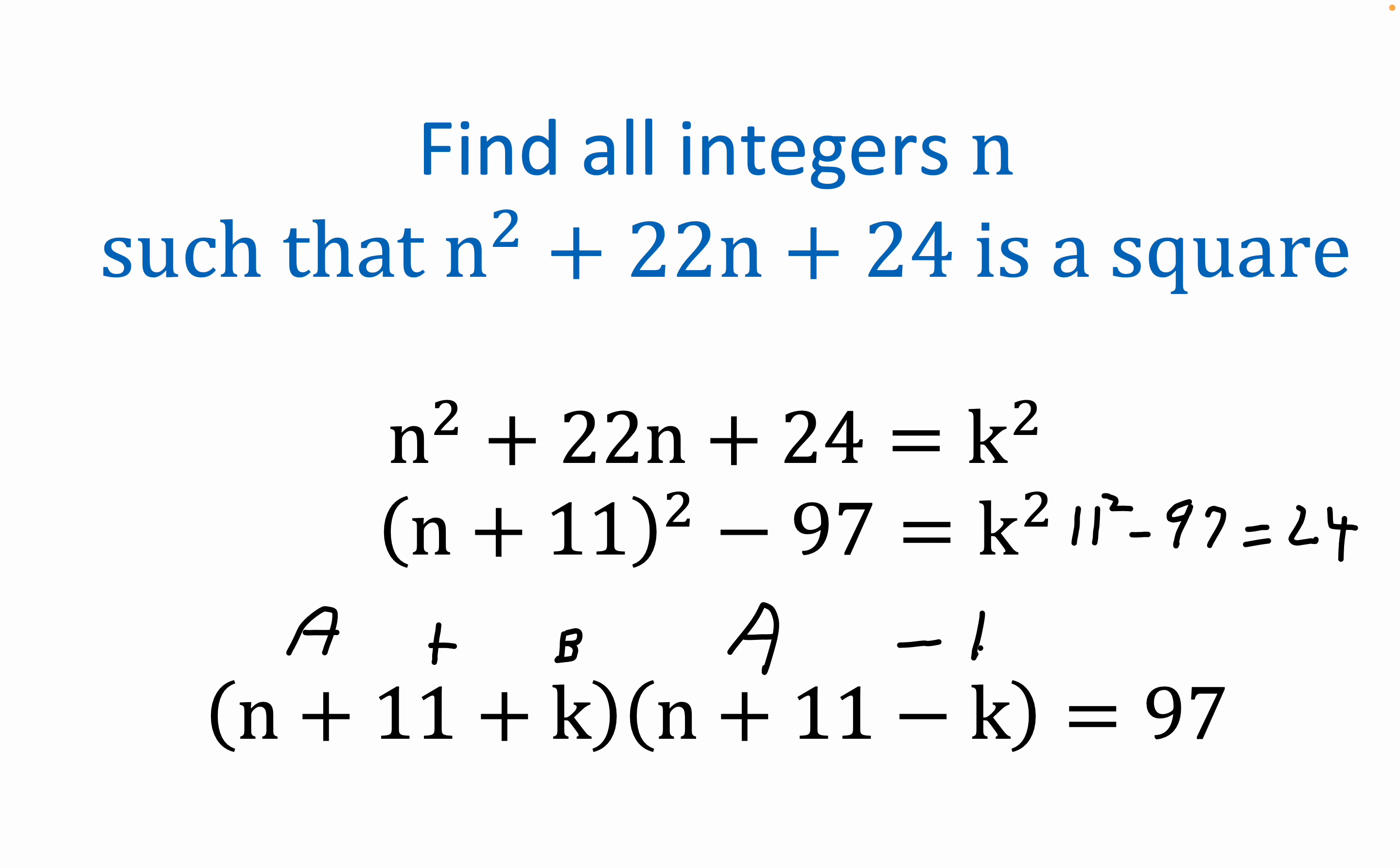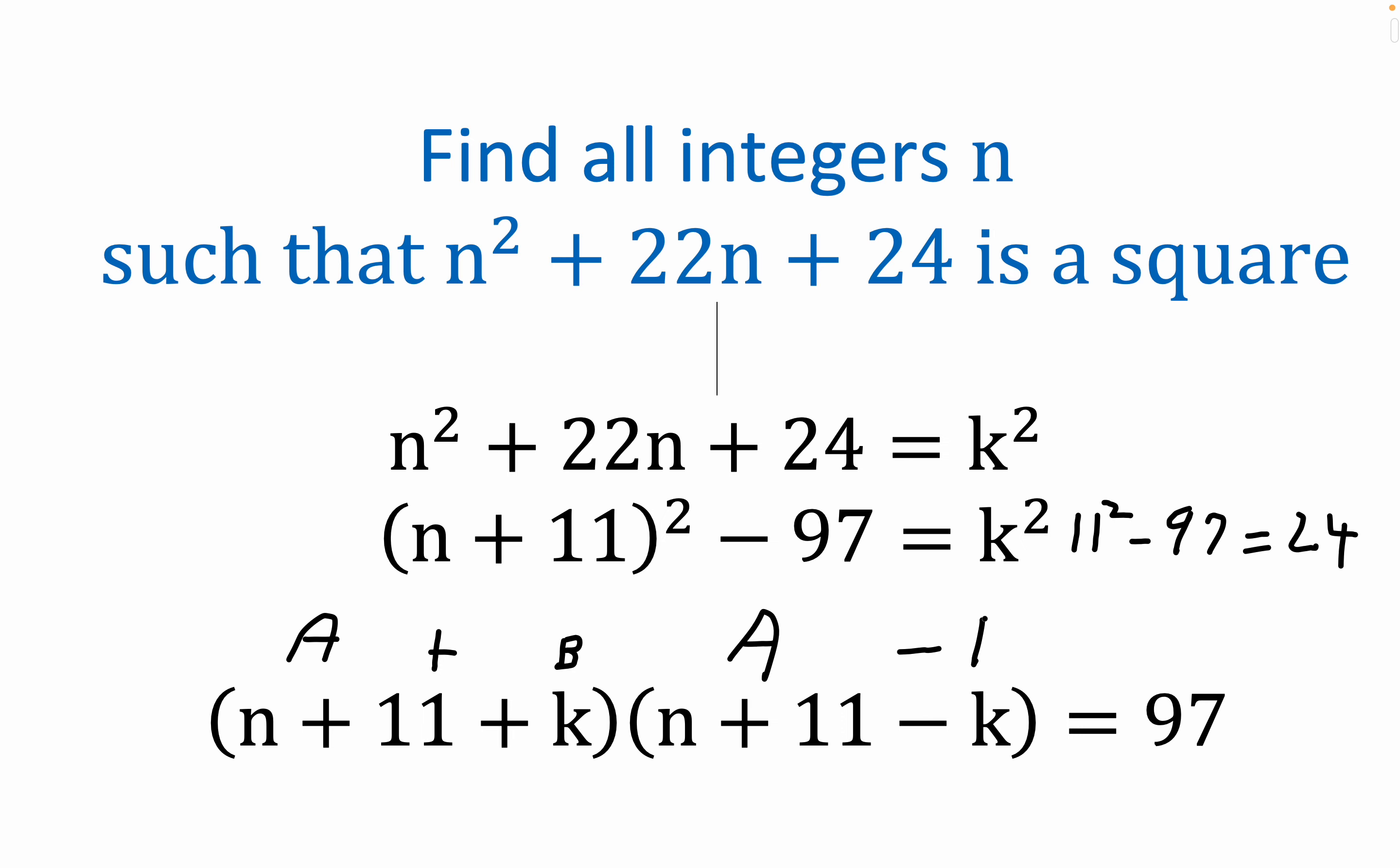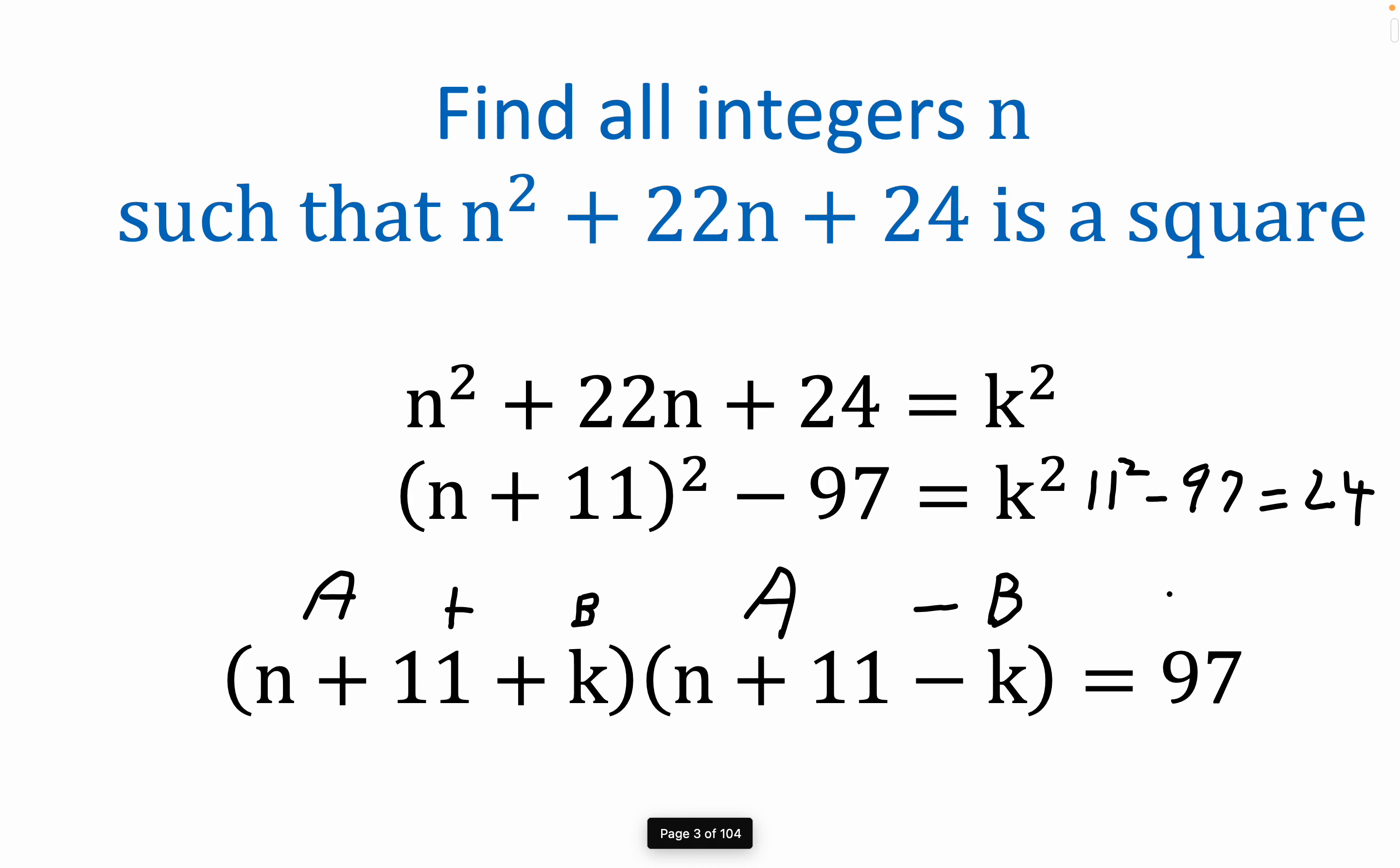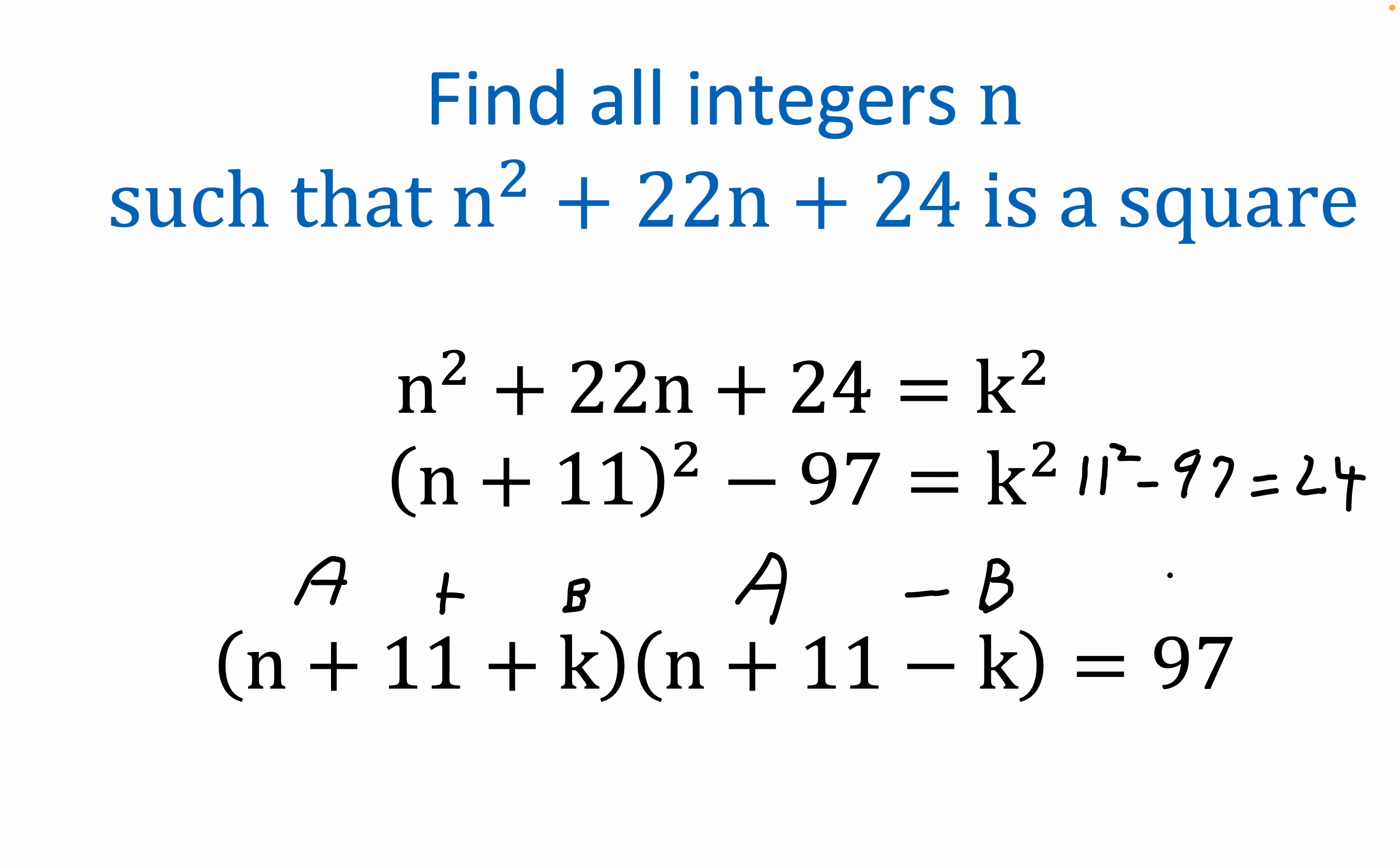You can see I did leave out one step, but if you reverse this and bring the K squared to this side and 97 to this side, this is in the form a squared minus B squared. a plus B times a minus B equals a squared minus B squared. Bring this over and that over, and you get a squared minus B squared.